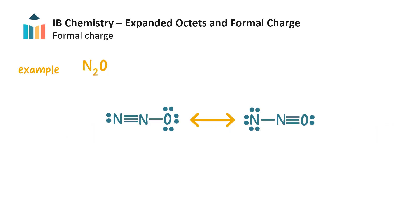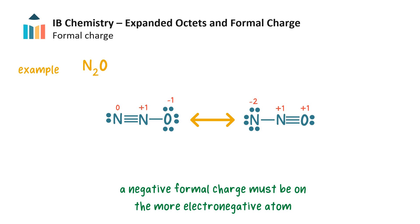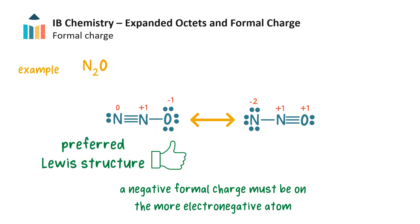In the next example, these are the possible Lewis structures for dinitrogen monoxide, or nitrous oxide, where each atom has a full octet. The sum of the formal charges for both molecules is zero, so to deduce which structure is preferred we need to select the one where the negative formal charge is on the more electronegative atom. Oxygen is more electronegative than nitrogen, and in the first structure oxygen has a negative formal charge — so this is the preferred structure.